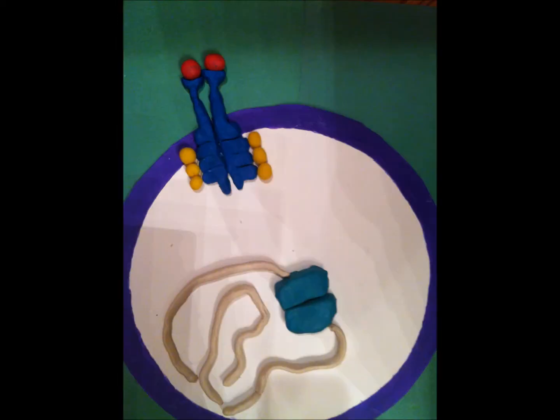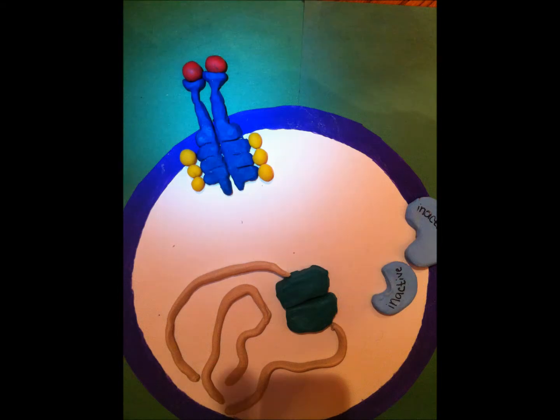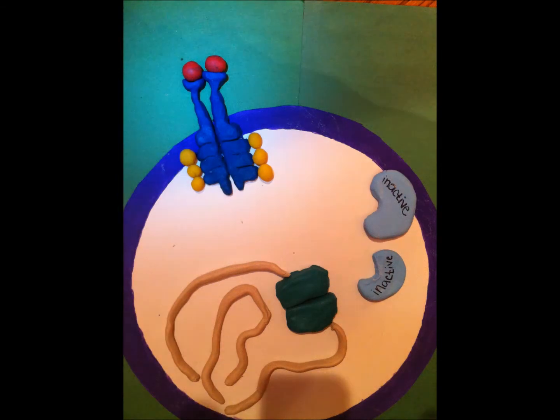The binding of a signal molecule, such as a growth factor, causes the receptors to bind together. This binding creates a dimer and activates the tyrosine kinase region of each polypeptide.